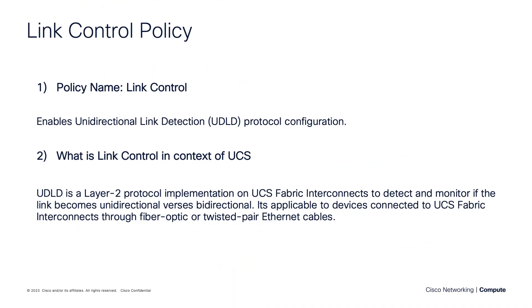So let's talk about link control policy. It enables the unidirectional link detection, UDLD protocol, on a given uplink port or port channel. It's a layer two protocol, and it's basically checking for bidirectional communications, making sure we're not unidirectional, which is really not desired. It works with both fiber optic cable connections as well as twisted pair. It's especially important on fiber optic because fiber optics can be damaged — there's a chance you could damage a fiber and be in fact unidirectional. So we want to be able to detect that and take action.